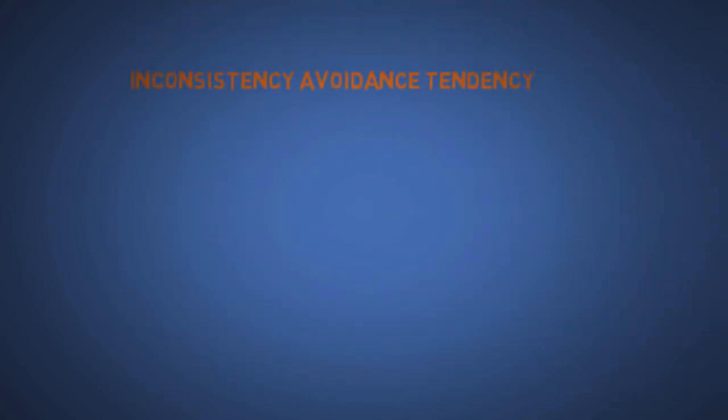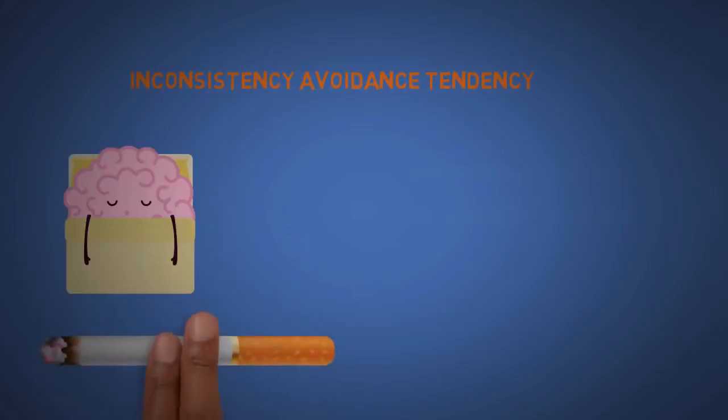The fifth is inconsistency avoidance tendency. Our brain conserves programming space by being reluctant to change. It's why eliminating bad habits can be difficult. The foot in the door technique is a great example of how people like to stay consistent. For example, can I borrow the car to go to school? Followed by, can I borrow the car for the weekend? The idea is to get people to agree to a small task or request first, then they'll be more likely to agree to a bigger one.